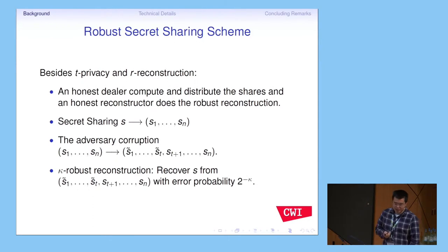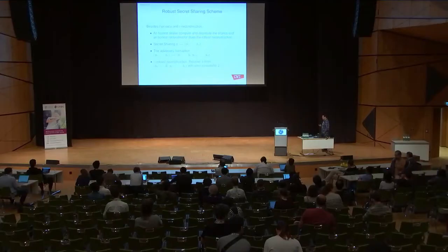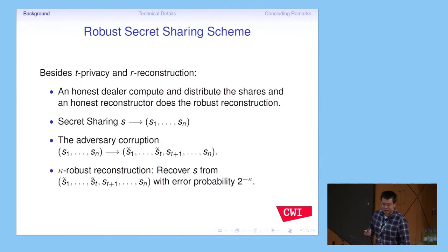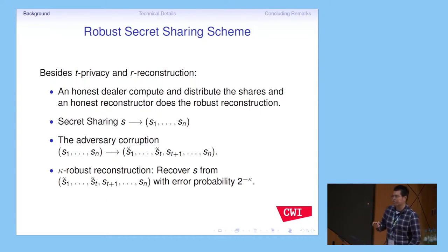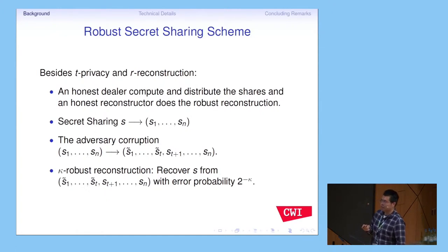What is the robust secret sharing scheme? Besides privacy and reconstruction, we have another feature. We imagine that the scheme has a dealer and a reconstructor. The dealer distributes shares among the parties, and the reconstructor collects shares and reconstructs the secret. However, because there are some corrupted parties, a corrupted party corrupts his shares and does not honestly report his share. Assuming we have T corrupted parties — the first T are corrupted — these T parties' shares are incorrect. We still robustly reconstruct the secret with high probability, and the error probability is exponentially small. We call this the robust secret sharing scheme.